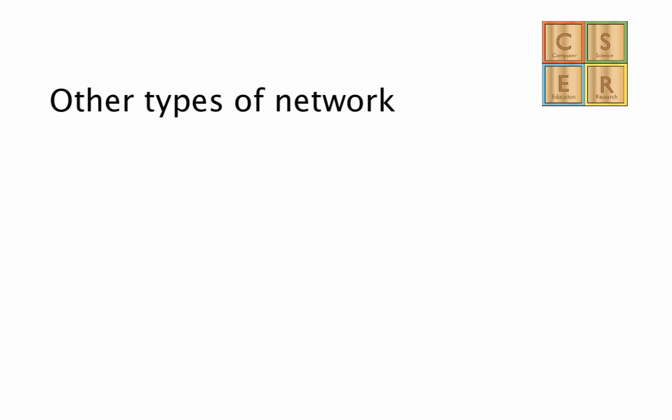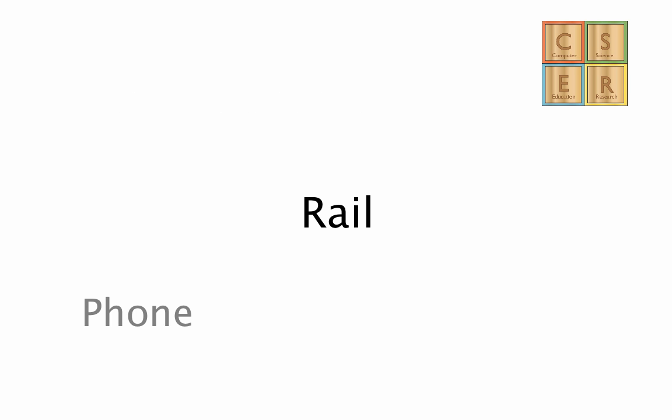Well, let's have a look at some other examples, because you're surrounded by networks, and if I remind you of those, it'll probably help you to put computer networks in context more easily. Let's look at some other types of network. We've got the rail network, we've got the phone network, and we've also got the postal network. When we think about these, what do all of them have in common?